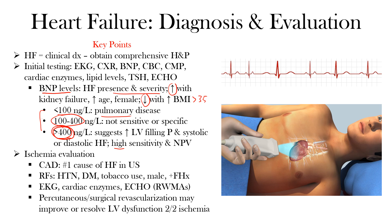Another important imaging test is an echocardiogram — an ultrasound of the heart. A transthoracic echo (TTE) is non-invasive and often sufficient. The echo is the primary diagnostic test for evaluation and provides information on cardiac systolic and diastolic function, heart size, regional wall motion abnormalities, and valvular disease. It can also provide clues about the underlying pathophysiology — for example, infiltrative processes such as cardiac amyloid — and prognostic information, especially with a new or severely reduced ejection fraction.